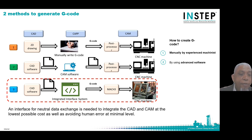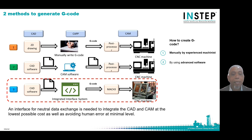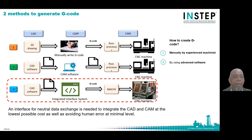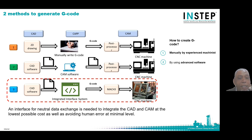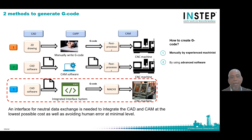Currently, there are two methods to generate G-code. The generated tool paths can be obtained from an experienced machinist or can be generated from an add-on application or stand-alone CAM software. Each of these methods has disadvantages of human errors or high cost of capital investment. The need for an effective and low-cost application that can overcome these limitations seems necessary. An interface for neutral data exchange is needed to integrate CAD-CAM at the lowest possible cost while avoiding human error.